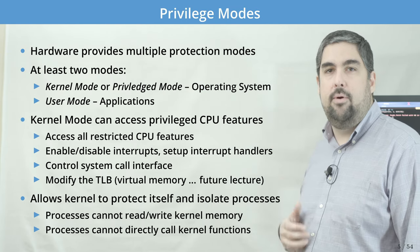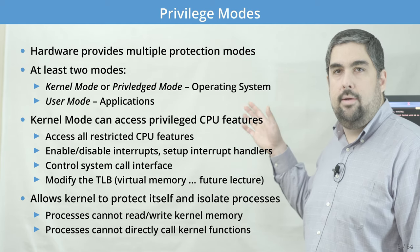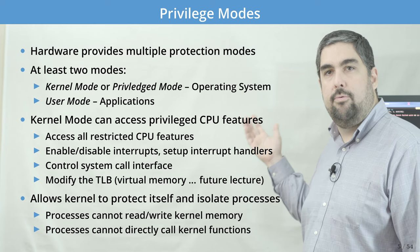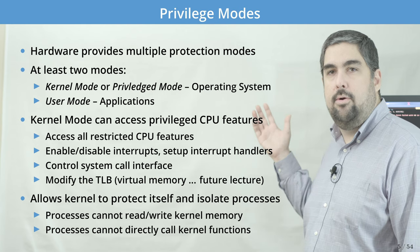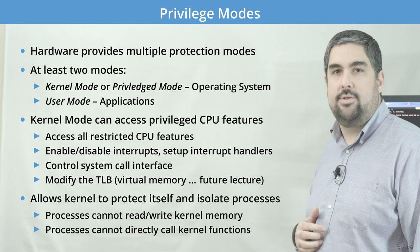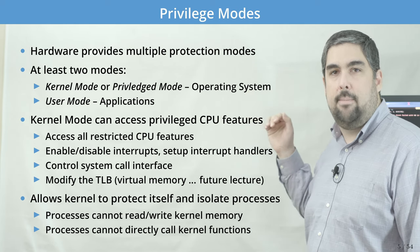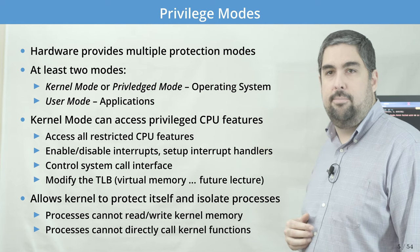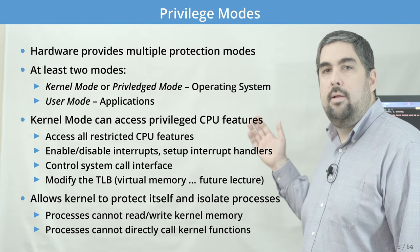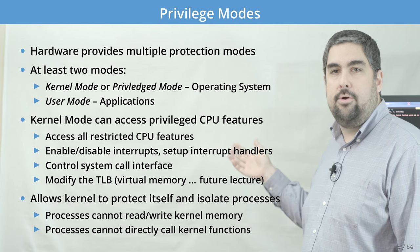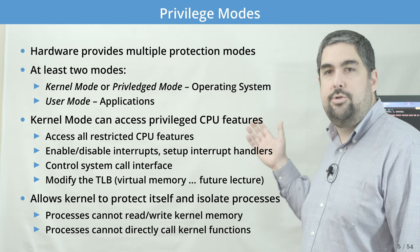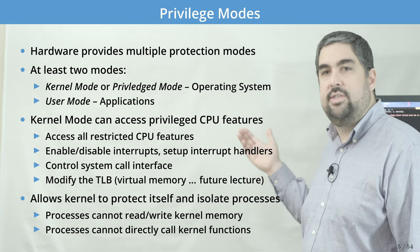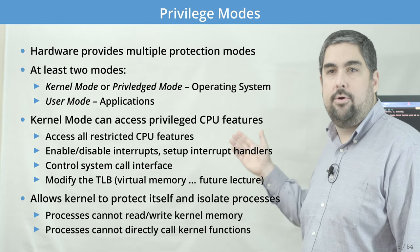This brings us to a review of what you should have seen in your hardware course. Hardware provides multiple operating modes, and typically there are at least two: a kernel mode or privileged mode, and a user mode. Kernel mode is special in that it can access pretty much every feature of a processor — all kinds of restricted features only meant for the operating system, the ability to enable and disable interrupts, control the system call interface, and modify the behavior of virtual memory. Combining these mechanisms allows the kernel to protect and isolate itself from the process: processes cannot read and write kernel memory, and processes cannot directly call just any kernel function — only those the kernel has exposed.